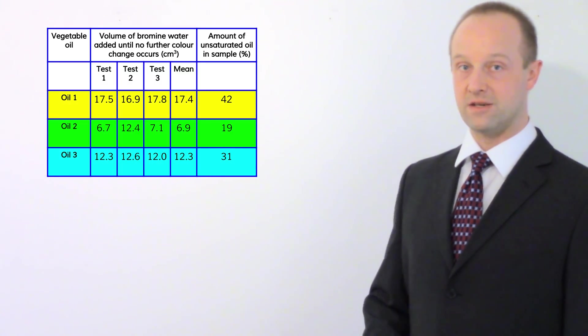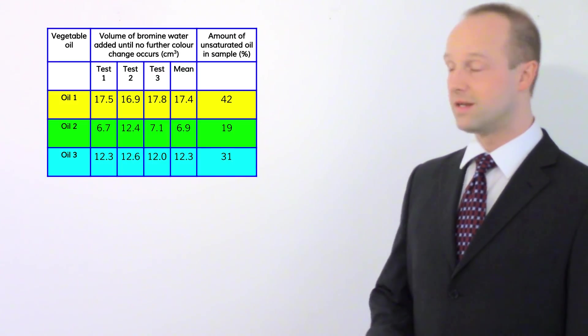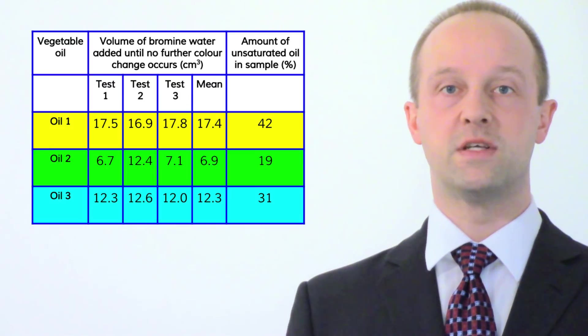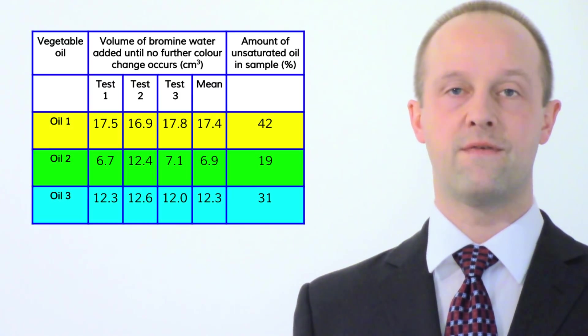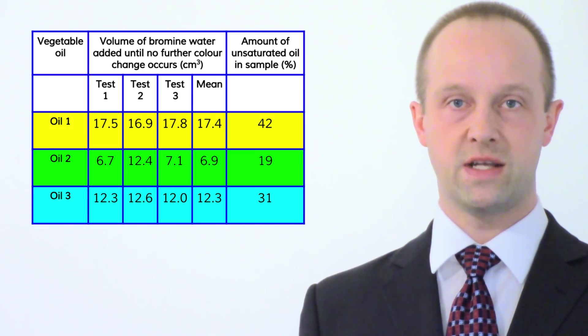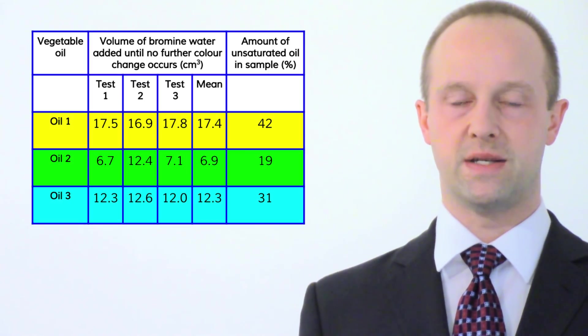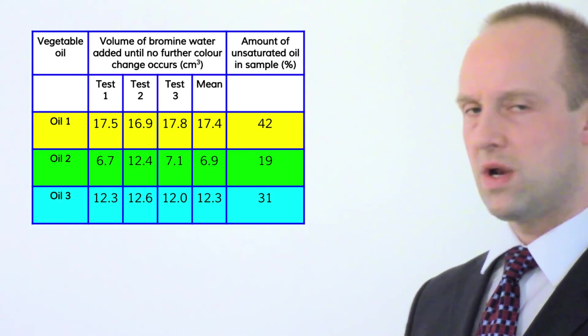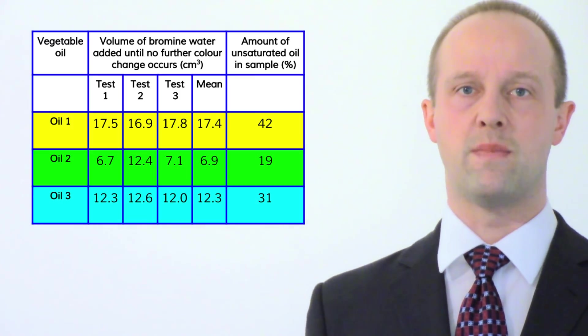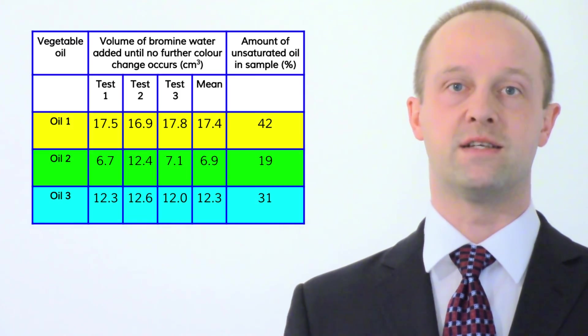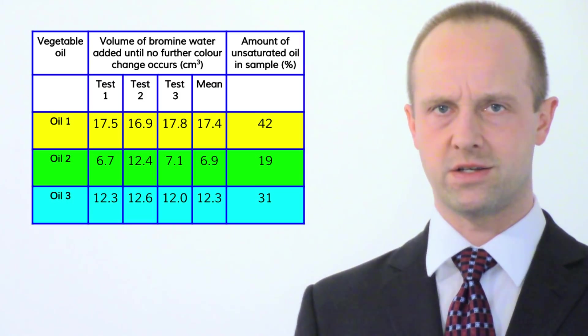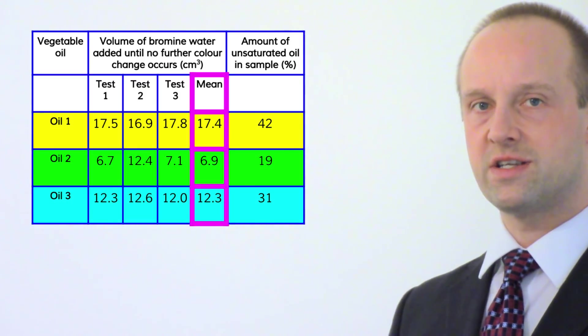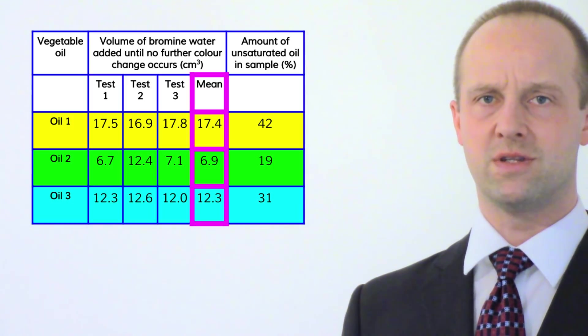So in this case to calculate these means we've taken all three results, added them up and then divided by three because we started with three. So that's what we've got here: Oil one, a test has been done three times and then a mean has been taken of all those tests. The same has been done for all three oils. Every one of them has had a test done three times and the means have been taken. Now it can look a little bit confusing with the means written next to the raw data like this. Remember the means are not raw data, they've been processed, you've done a calculation on them.